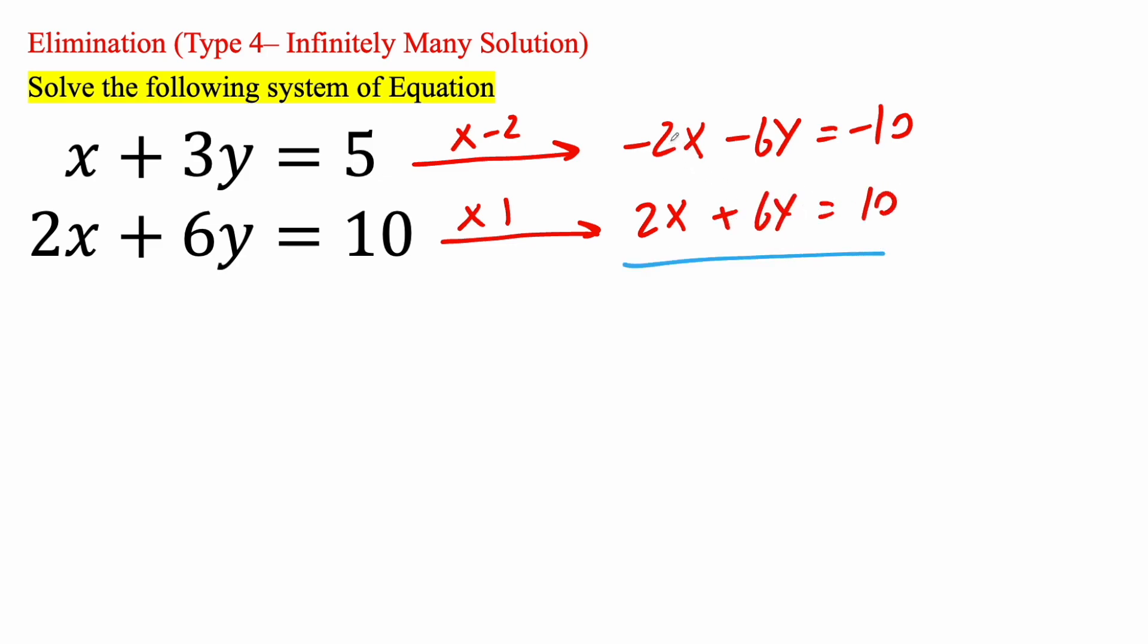And so if we combine negative 2x plus 2x is 0, negative 6y plus 6y is also 0, negative 10 plus 10 is also 0. So whenever you have 0 is equal to 0, you'll say you have infinitely many solutions. And I'll show you why this is called infinitely many solutions.